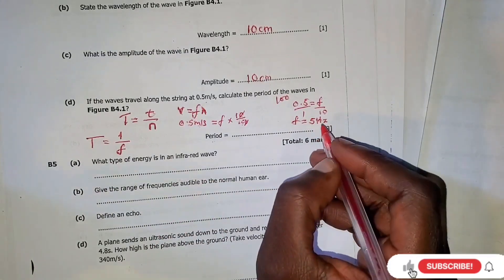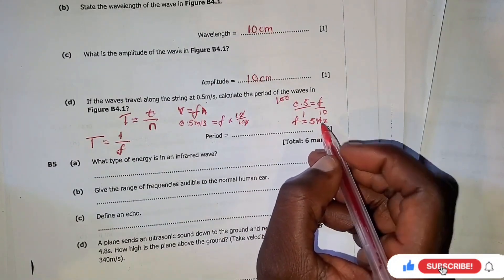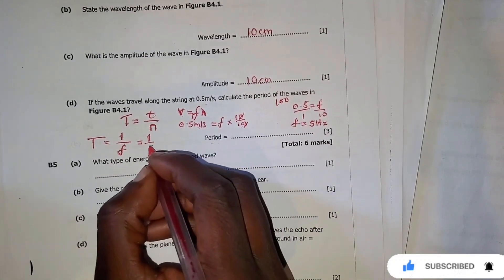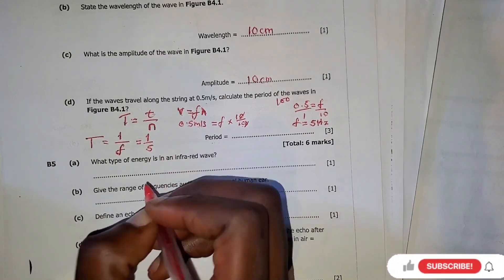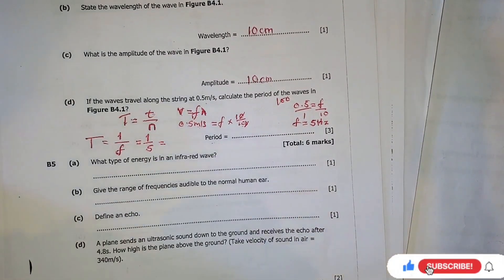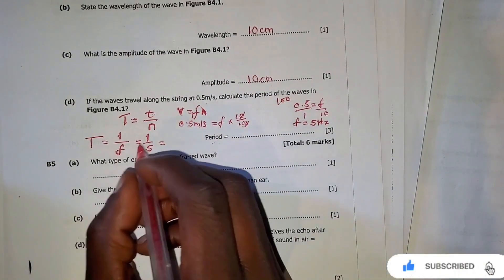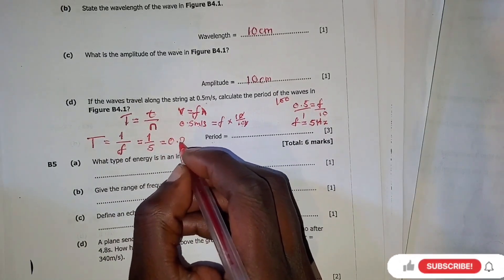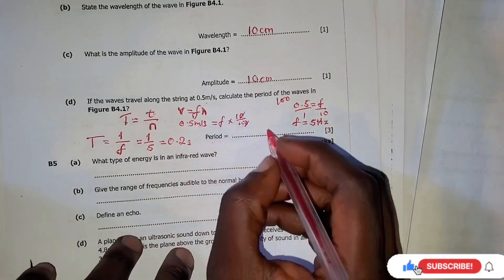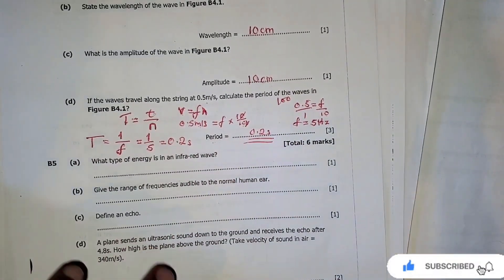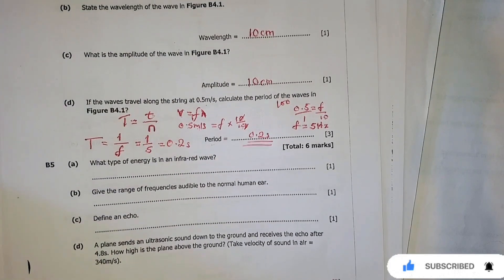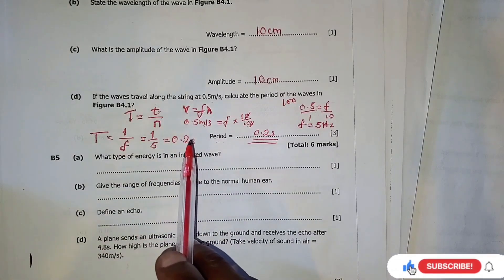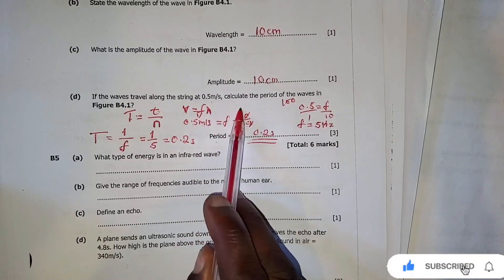Now that we have frequency, we use period equals 1 over frequency, which is 1 over 5 = 0.2 seconds. That is the period. Remember, the formula you use depends entirely on the data you are given.